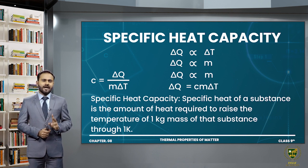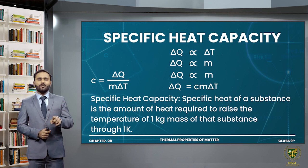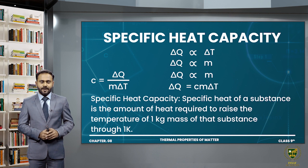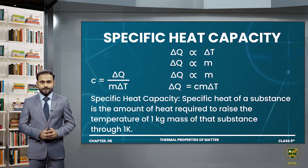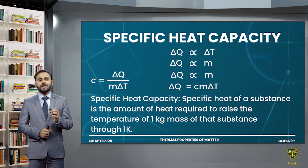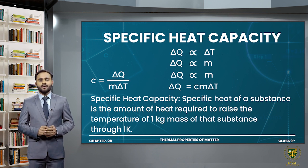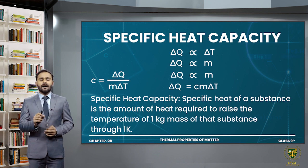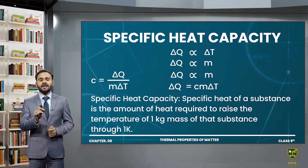Toh yahan par maine ye conclude kar liya ke delta Q jo hai wo directly proportional hai delta T ke bhi aur wo directly proportional hai mass ke bhi. Toh agar mein in dono ko ek equation mein lekar aaon, that is delta Q is directly proportional to m·delta T. Jab bhi hum proportionality khatam karte hain toh ek constant aata hai c. Toh delta Q is equal to c·m·delta T. C is the constant of proportionality which is specific heat capacity.